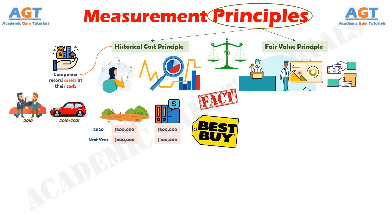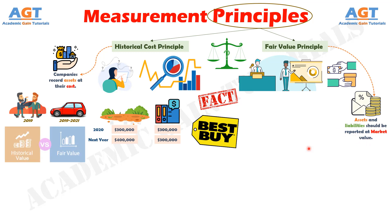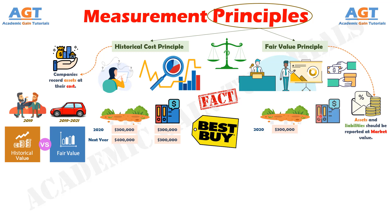The fair value principle states that assets and liabilities should be reported at fair value, which means the market value of an asset or to settle a liability. Fair value information may be more useful than historical cost for certain types of assets and liabilities. For example, if Best Buy purchases land for $300,000, the company initially reports it at $300,000, but what does Best Buy do if by the end of the next year the fair value of the land has increased to $400,000?